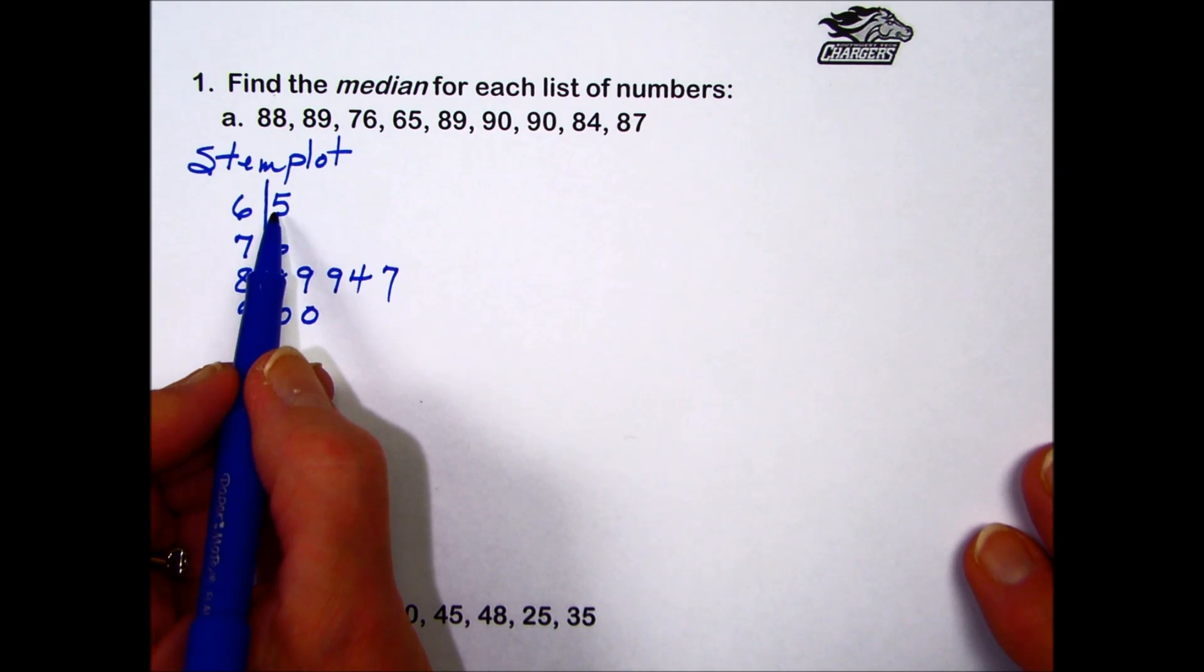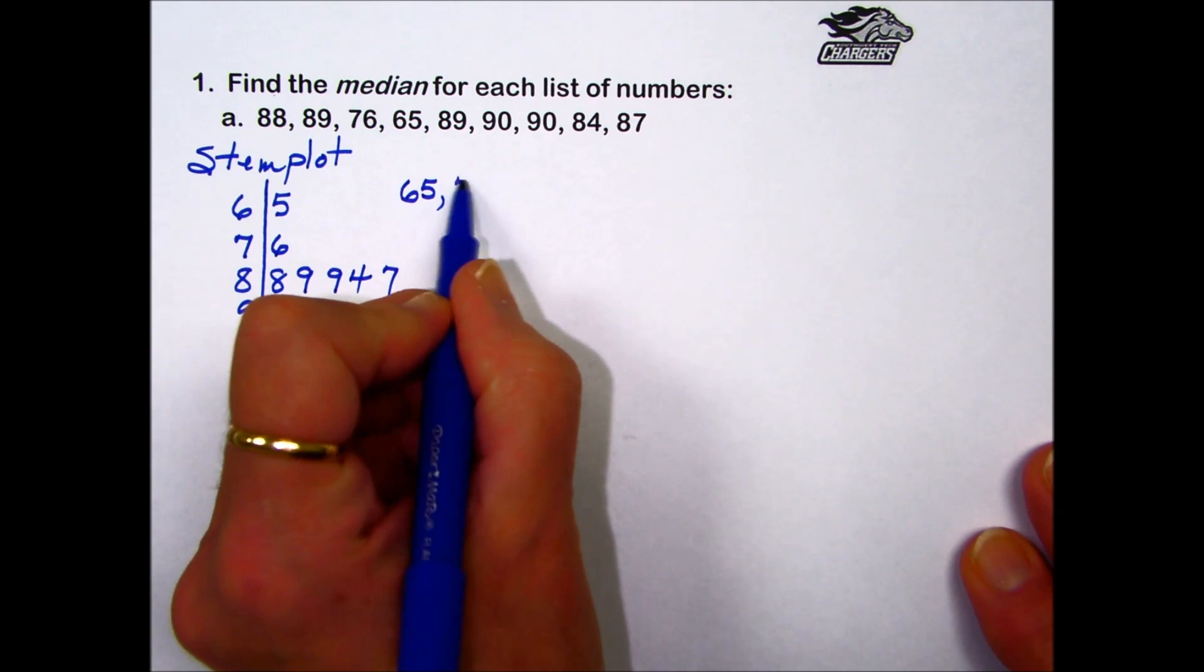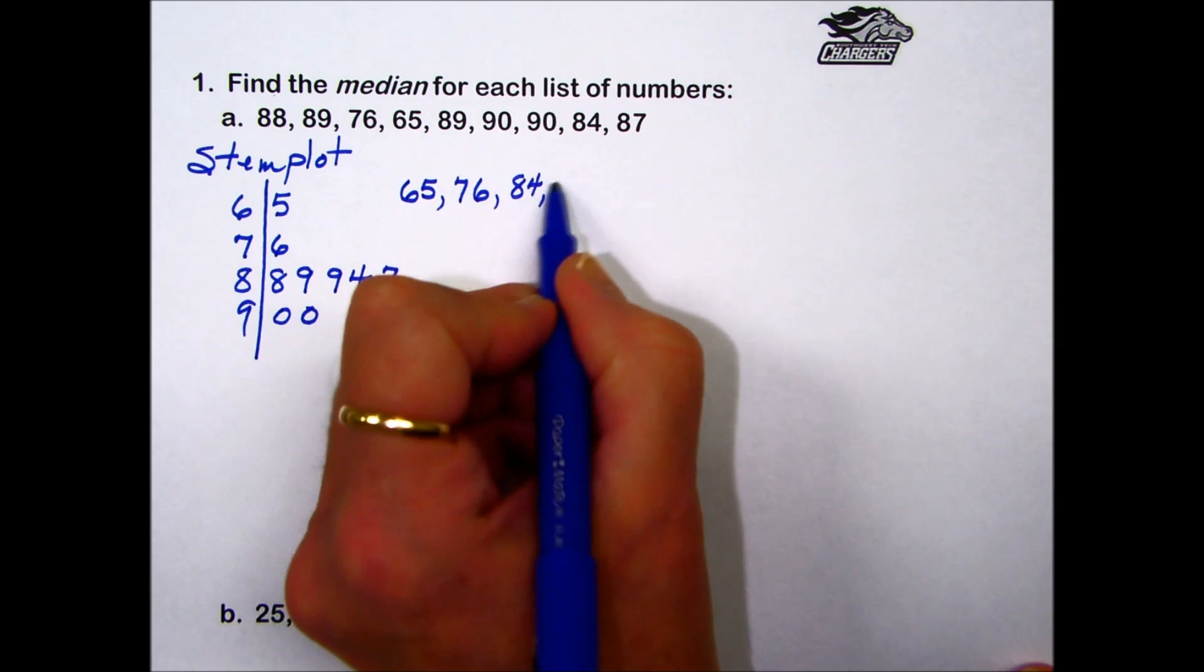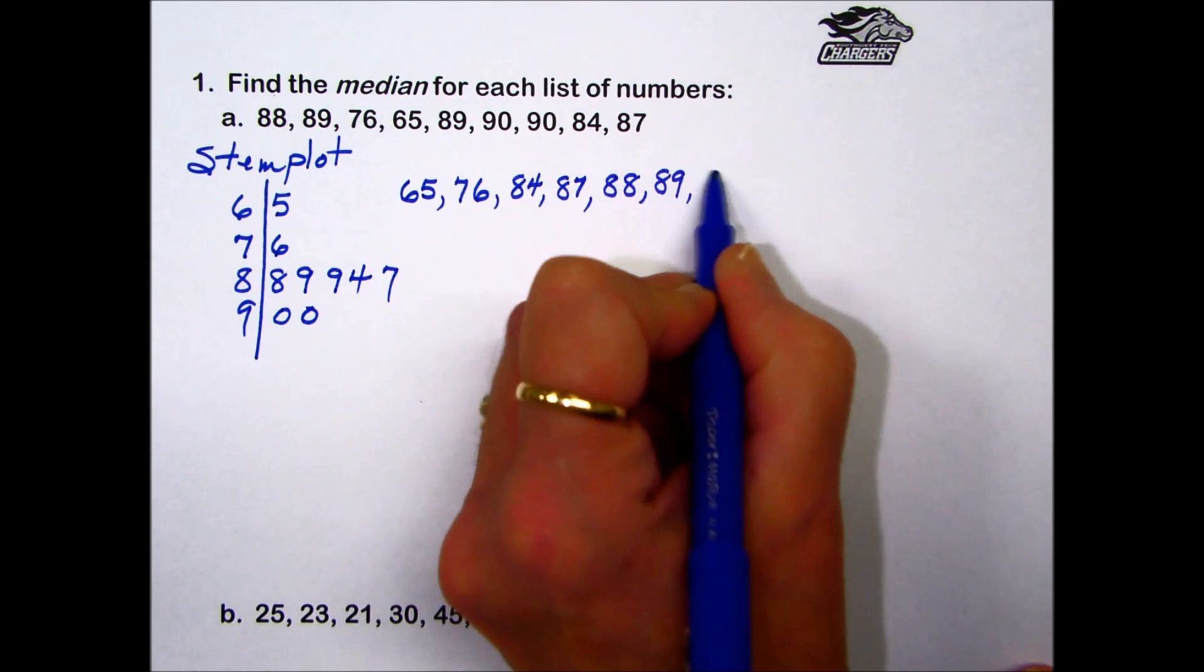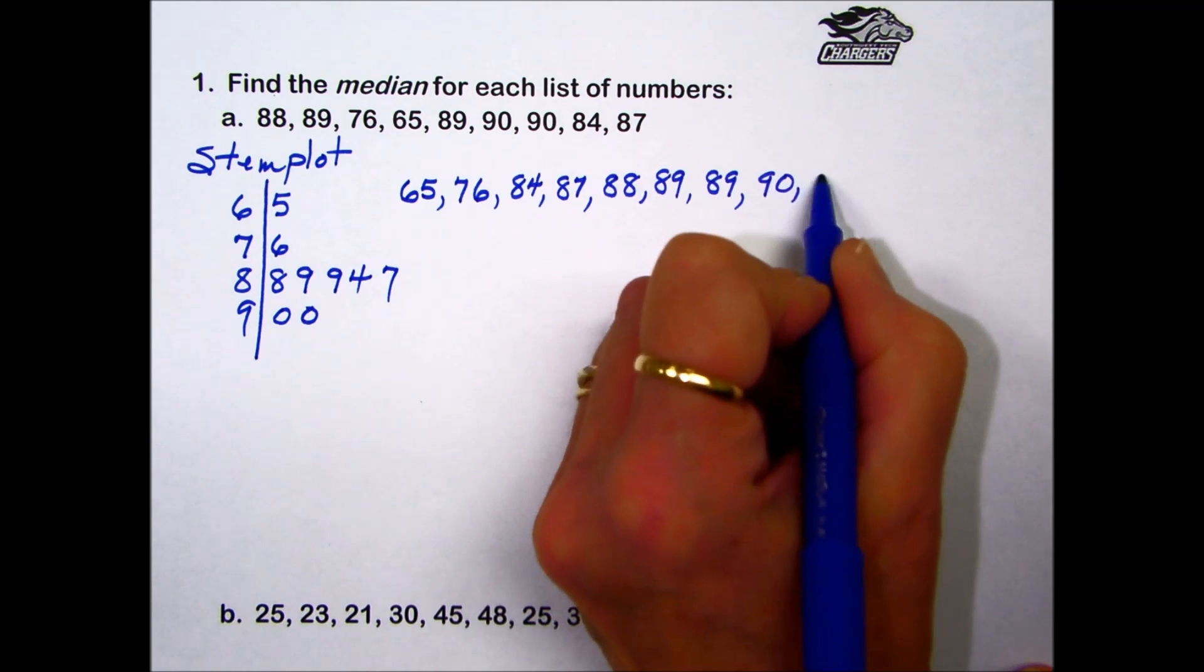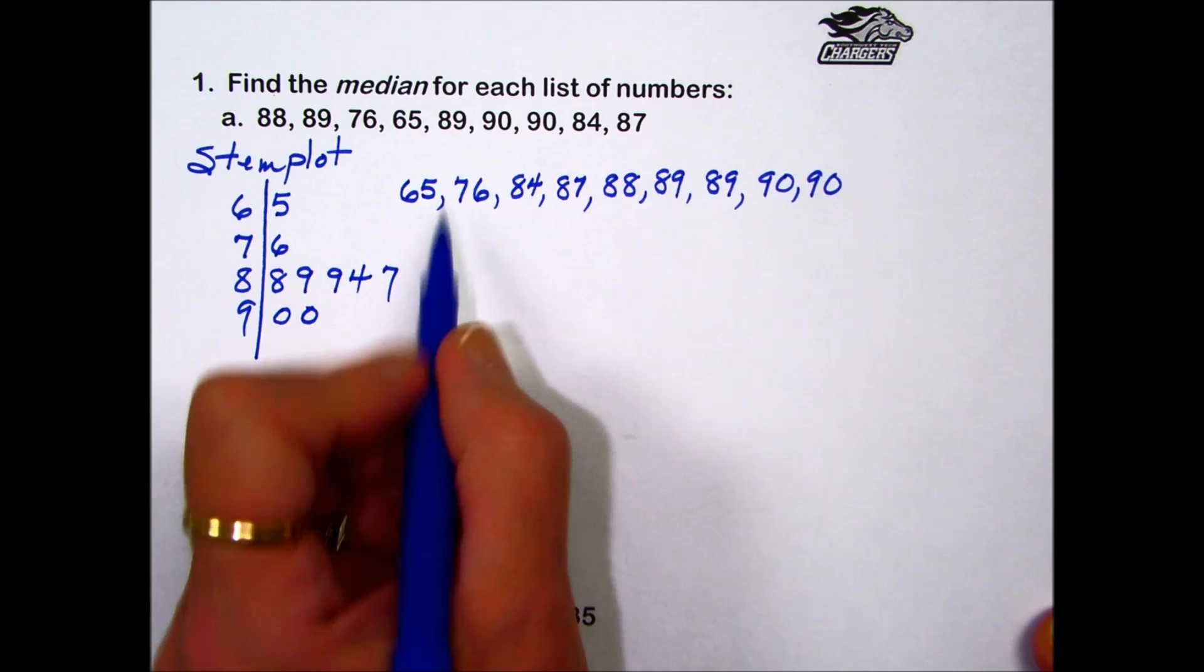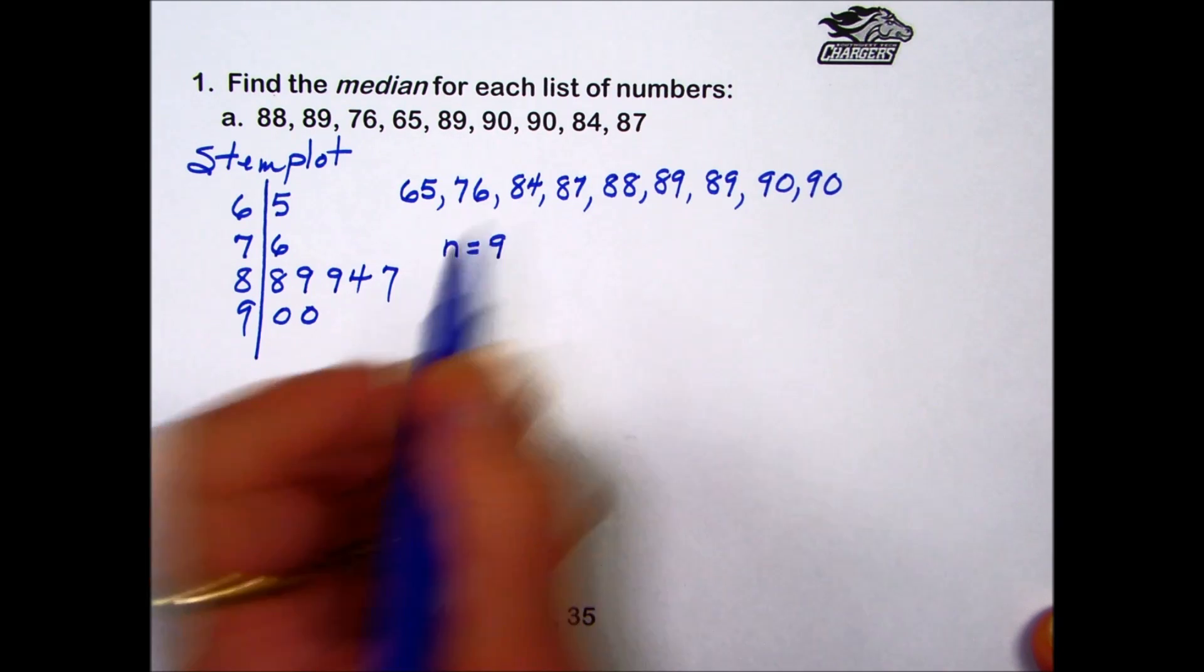It's organized them within the tens, and now we can set up our values in order from smallest to largest. We put it back together: the smallest value we had was 65, the next was 76. The 80s require a little sorting: our smallest value is 84, the next value would be 87, followed by 88 and two 89s. Next we jump to our 90s and we had two 90 values. The number of values that we have, we need to count them up: we have 2, 4, 6, 8, 9 values here.